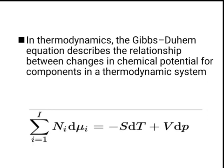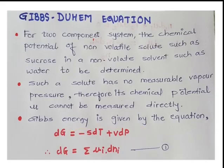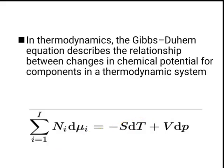The Gibbs-Duhem equation describes the relationship between changes in chemical potential for components in a thermodynamic system. Substituting dG equals summation of mu_i dn_i, we can write the equation as summation of n_i d mu_i equals minus S dT plus V dP. This equation describes the relationship between the change in chemical potential for components in a thermodynamic system.